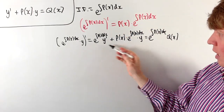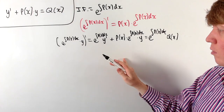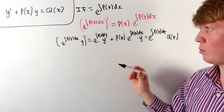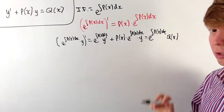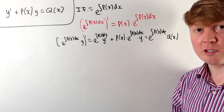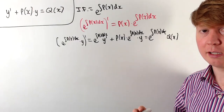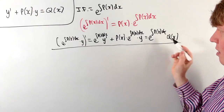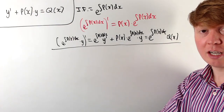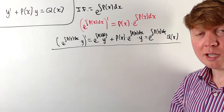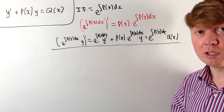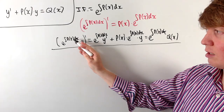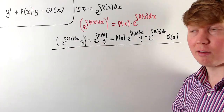The left-hand side is now just a simple derivative, so we integrate to get e to the integral of p times y, and as long as we can integrate the right-hand side, the differential equation is solved easily. If we want to use a similar method for a second-order differential equation, we look at the second derivative of e to the integral of p times y.